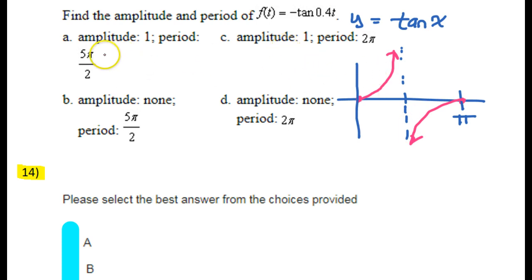So since tangent does not have an amplitude, I'm going to throw out choice A, which says amplitude 1, and choice C, which says amplitude 1. We've narrowed it down to these.